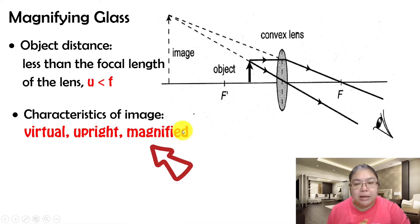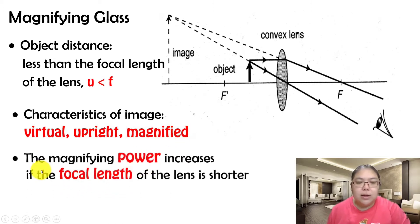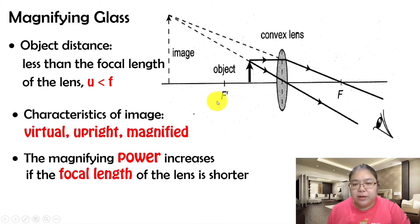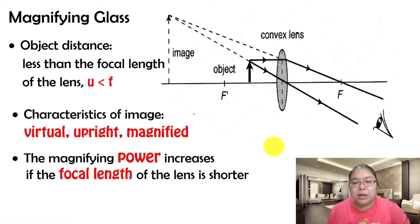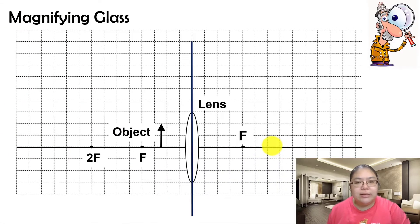The magnifying glass magnifies — the power increases if the focal length of the lens is shorter. If f becomes smaller, the power of the lens becomes higher. Power and focal length are inversely proportional. Higher power means the lens is thicker, and the focal length becomes shorter.